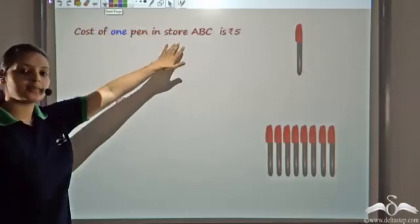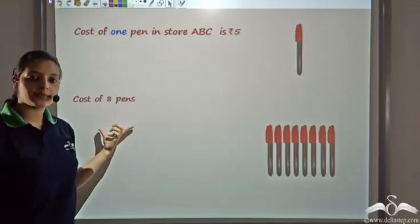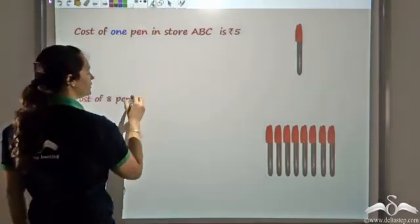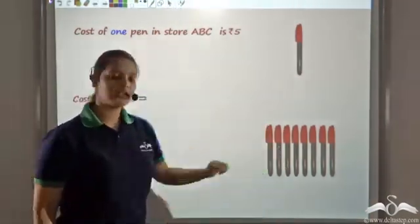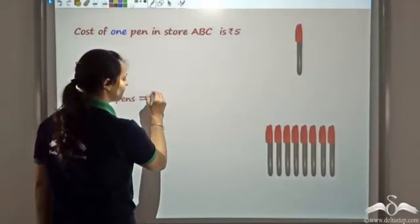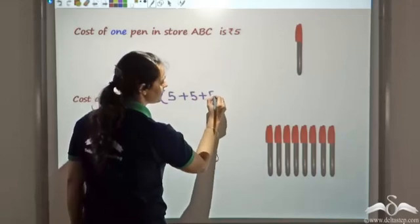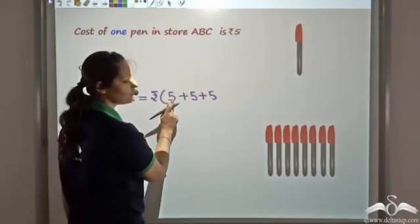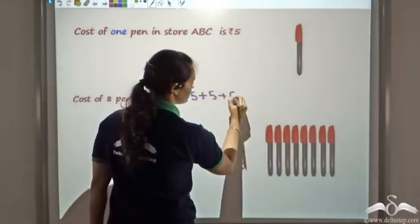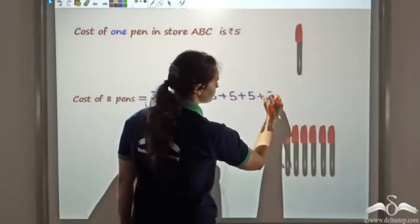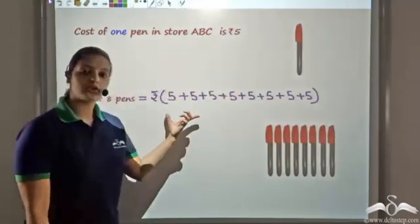ABC shop sells 1 pen for 5 rupees, and we want to find the cost of 8 pens. So the cost of 8 pens here would be: since 1 pen costs 5 rupees, for 8 pens you have to add 5 eight times. This is the price of 1 pen, so for 8 pens you will have to add it 8 times.